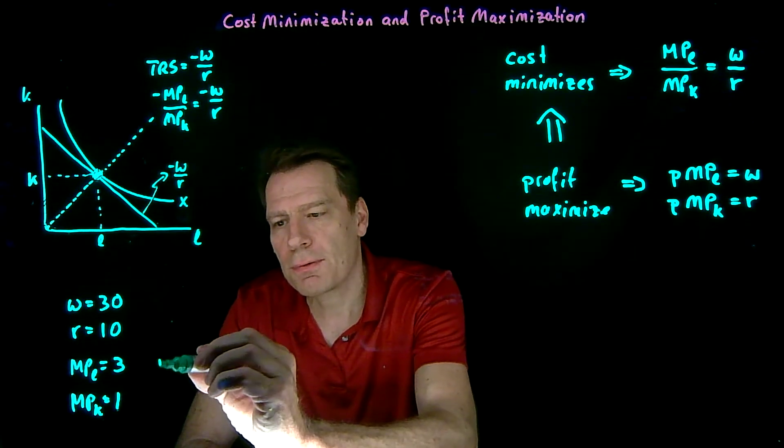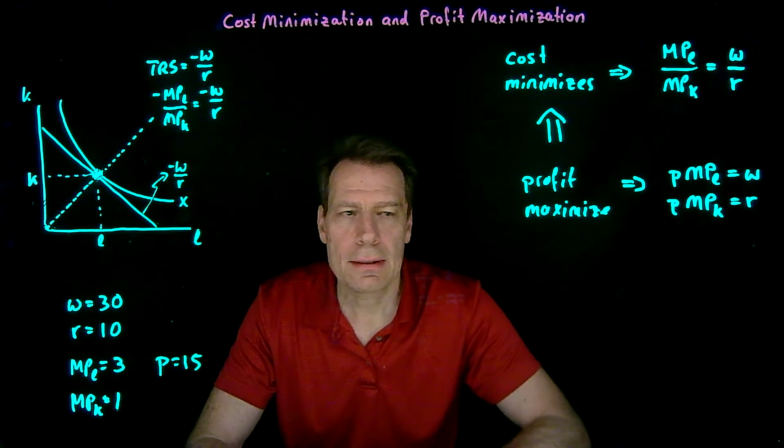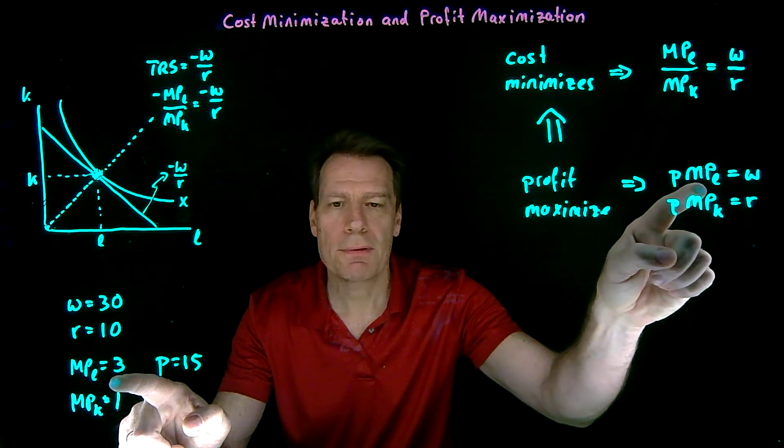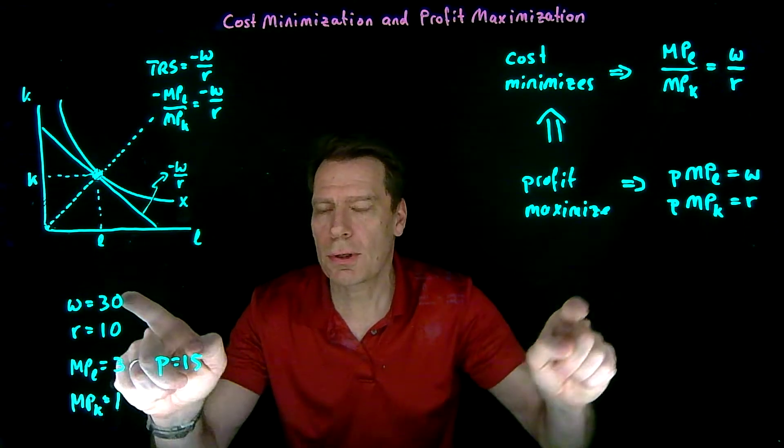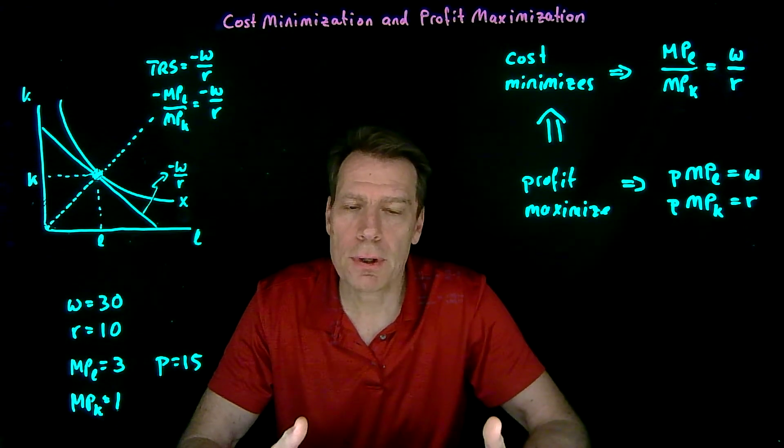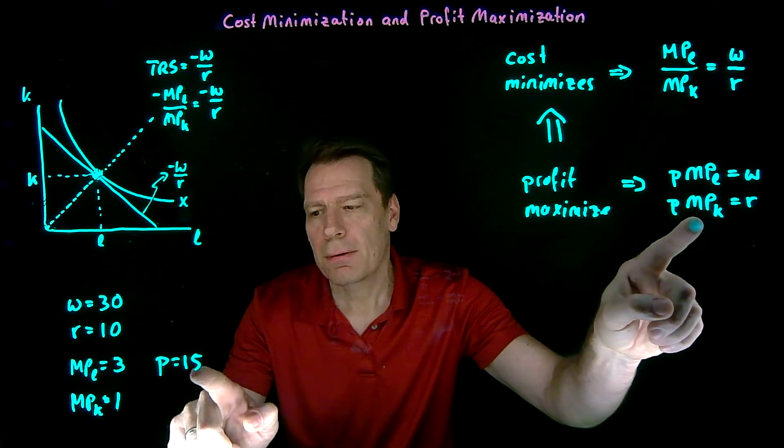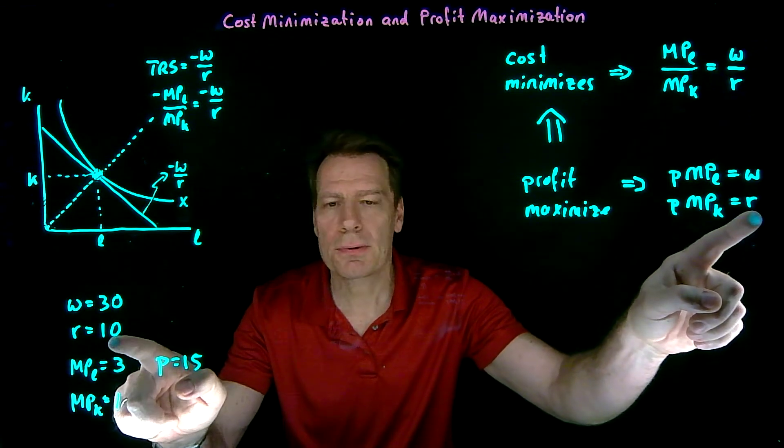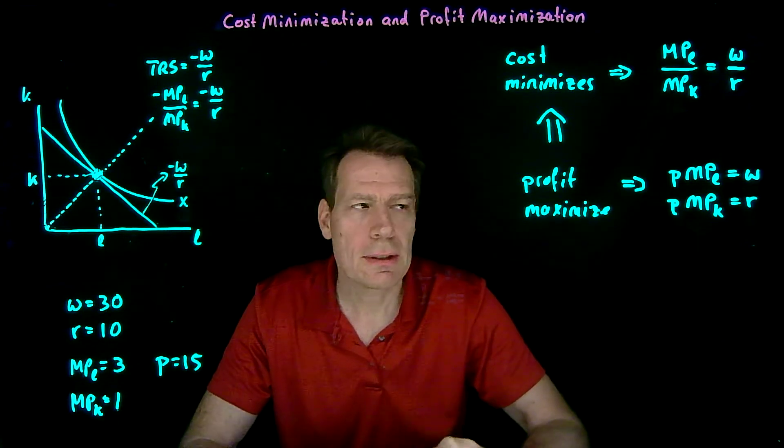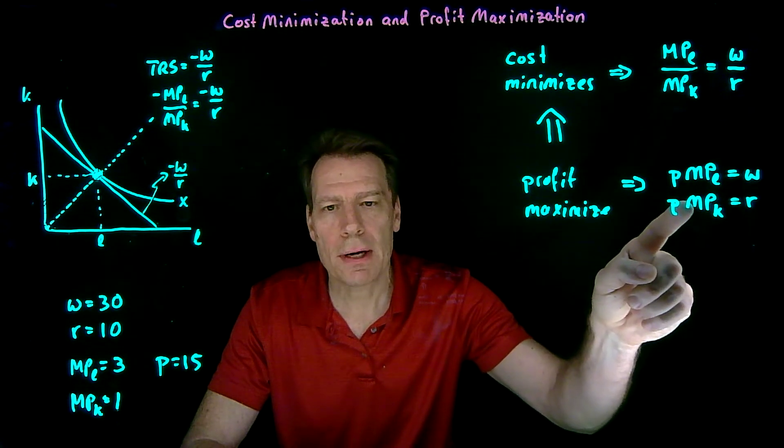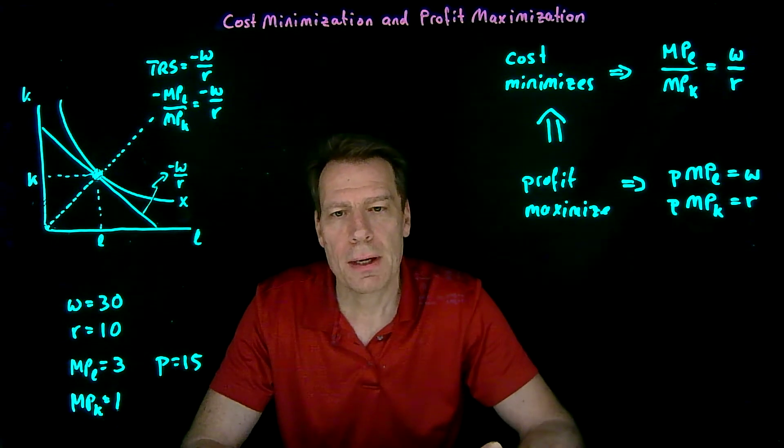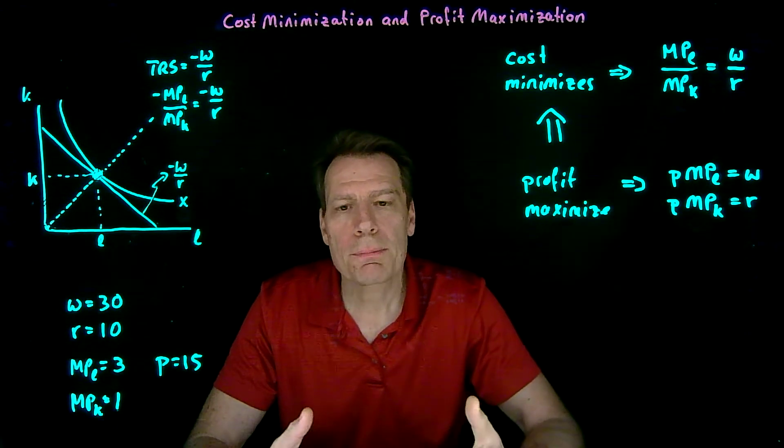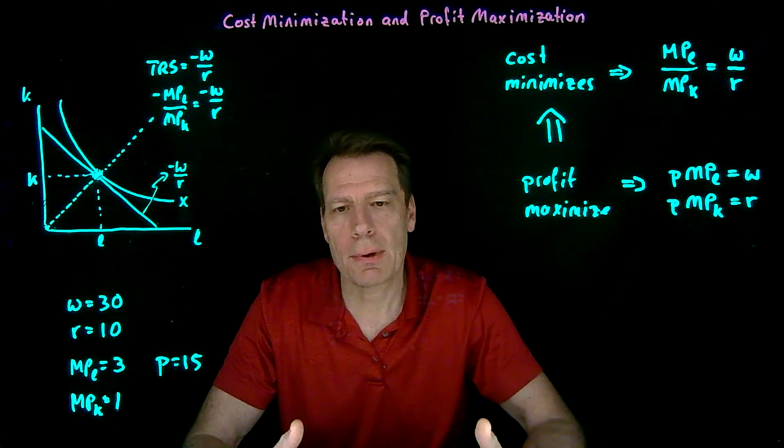But we don't know if these equations hold, because we haven't said anything about the output price. So suppose that the output price was 15. In that case, we can check: 15 times the marginal product of labor of 3 would be 45 on this side, but the wage is only 30, which means we haven't hired enough workers yet. Similarly for capital, 15 times the marginal product of capital is equal to 15, but the rental rate is only 10. We haven't hired enough machines. They're making more additional revenue for us than what they're costing us. So that means when the output price is 15, even though we're cost minimizing, we're not producing enough. We're not hiring enough labor and capital.